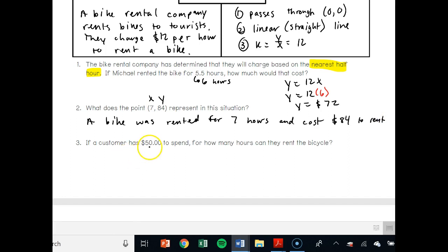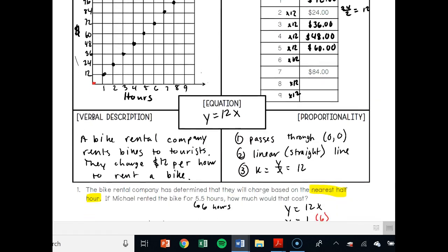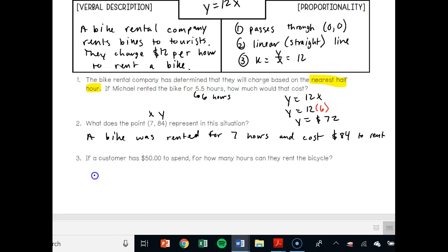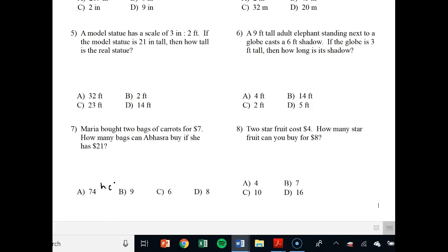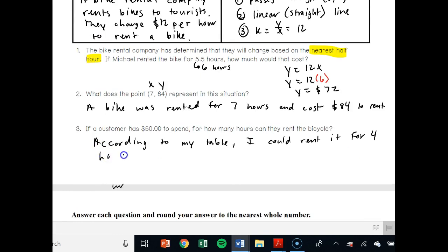If a customer has $50 to spend, how many hours can they rent the bicycle? So if you go here to your total cost table, you definitely can do it for one, you can do it for two, three, I can do it for four. I couldn't do it for five because that would cost me $60. So according to my table, I could rent it for four hours. Go on to the back here, the second hours.